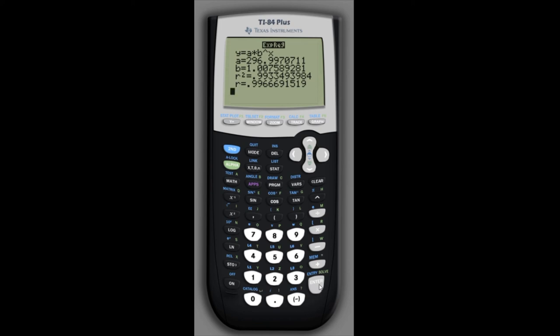So we can write down this model using our notation. We would write p of t instead of y equals a, which is 296.99, so we'll write 297, times b, which is 1.0076, approximately. And then instead of to the power of x,